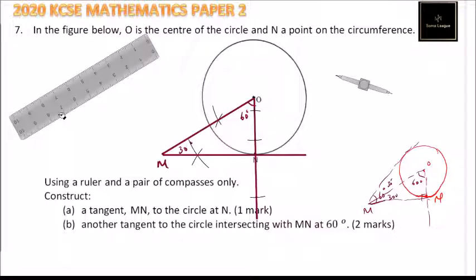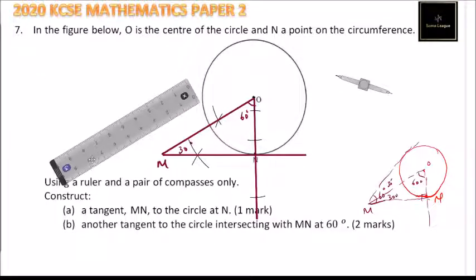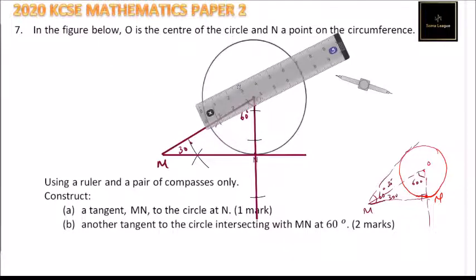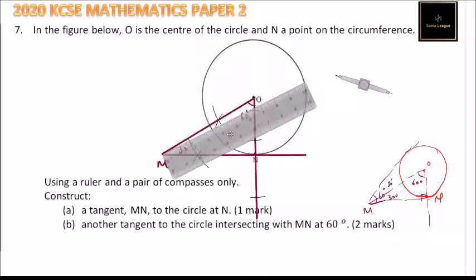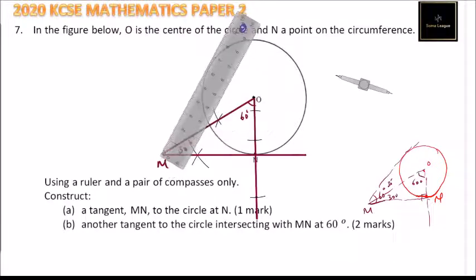If we now come and draw, we can use our ruler and use the point M to draw the tangent. We have our point M there and using the ruler, we can draw the tangent. With that, we now have our tangent.